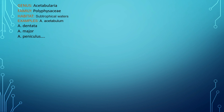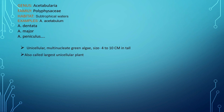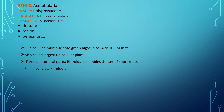Coming to the classification: Acetabularia belongs to the genus Acetabularia and family Polyphysaceae. It grows usually in subtropical water regions. Some examples include Acetabularia acetabulum, Acetabularia dentata, Acetabularia major, Acetabularia paniculus, and so on. It is a unicellular, multi-nucleate green algae, and its size varies from 4 to 10 cm in height. It is also called the largest unicellular plant.